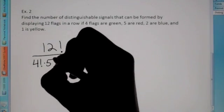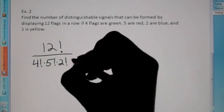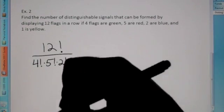So now, times five factorial. There's two blue, so two factorial, and then one yellow. Technically, you don't have to put one factorial. That's just the number one.